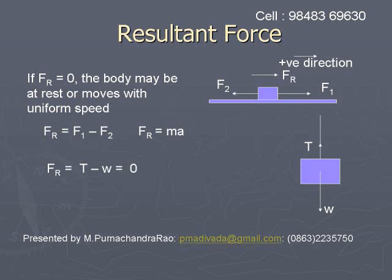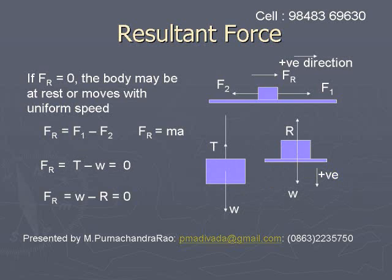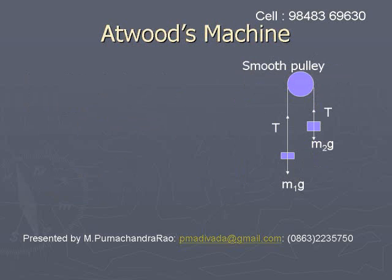If we consider a block suspended by a string and apply Newton's second law: if the mass is held at rest, then F_r equals W minus R equals zero. In the left side figure, T minus W equals zero when the block is at rest. When the block rests on a horizontal surface, F_r equals zero, which gives W minus R equals zero. This is how we apply Newton's second law.